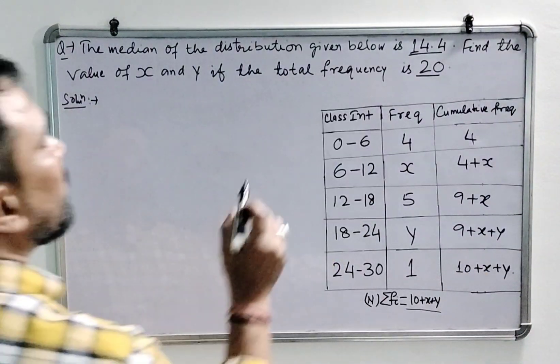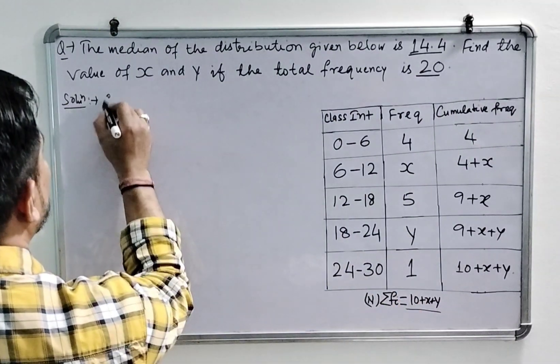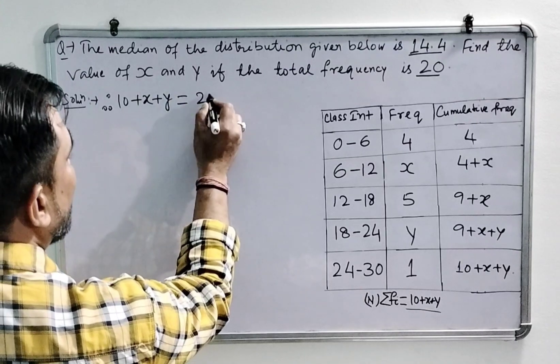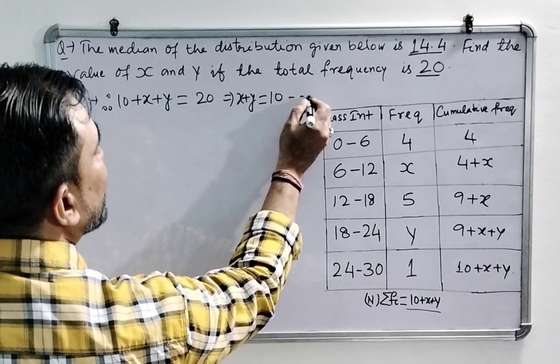Now we look here. The total frequency is given as 20, and here we have calculated the total frequency as 10 plus x plus y, so it will be equal to 20. So x plus y is 10, and this is equation number 1.